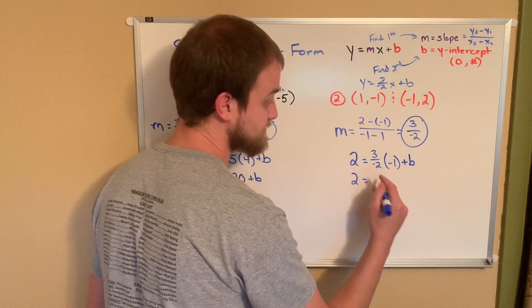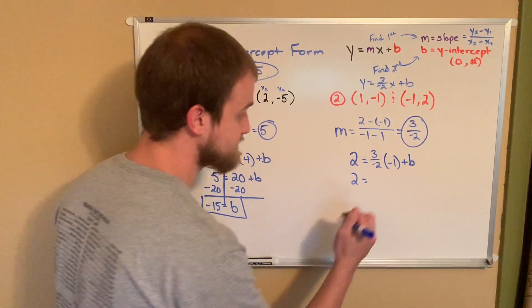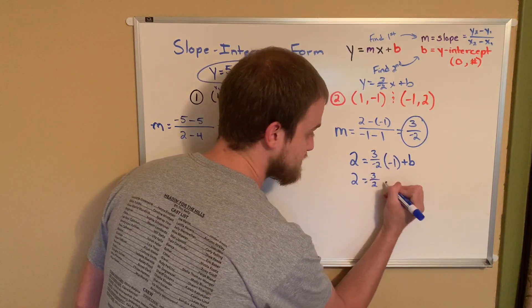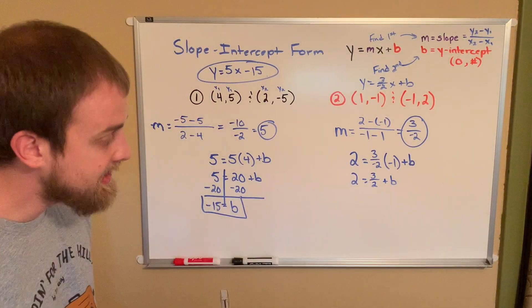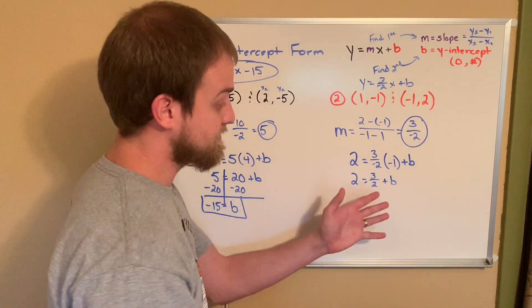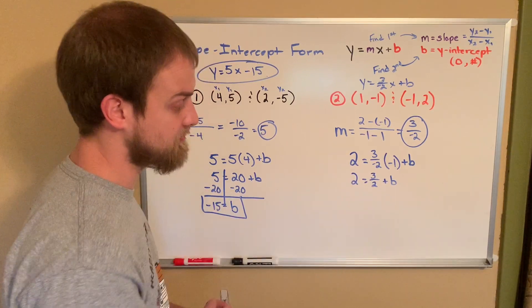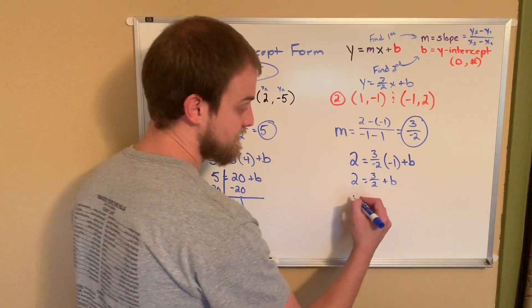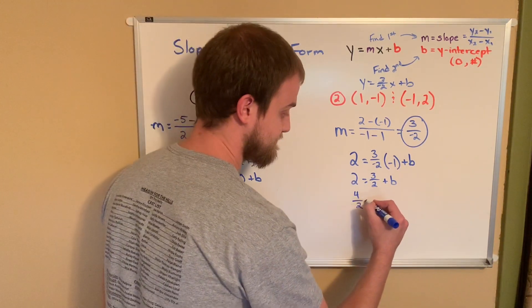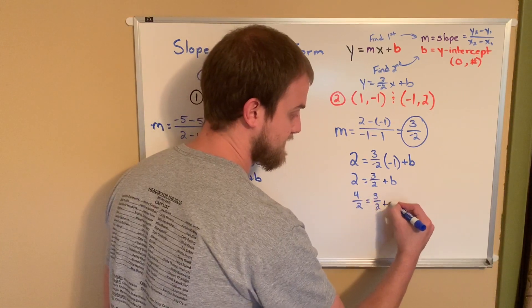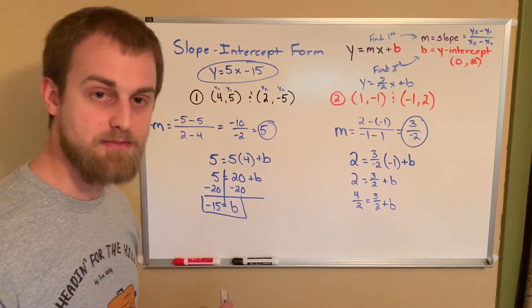Simplifying a little bit, I get 2 equals 3 over negative 2 times negative 1. You can use a calculator for this, but I'll speed it up for you. It should give you 3 over 2, or 3 halves, plus b. Now again, you might have a calculator available. So we're going to do some math involving some fractions here. So it might be wise to turn this whole number of 2 into halves. Well, 2 as halves is 4 halves.